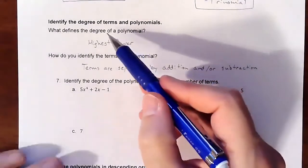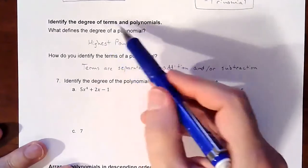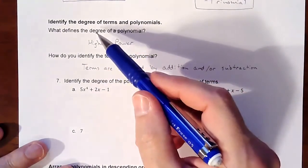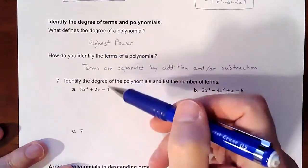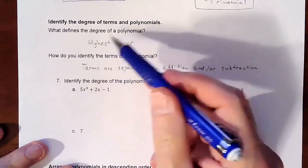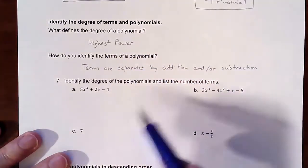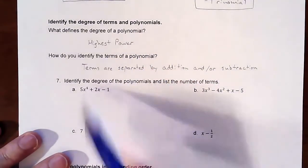In this video we are going to identify the degree of terms and polynomials, talking about what defines the degree of a polynomial. As you look through a polynomial, you're really just going to categorize it by what is the highest power, regardless of the order. You want to dig out what the highest power is on it.